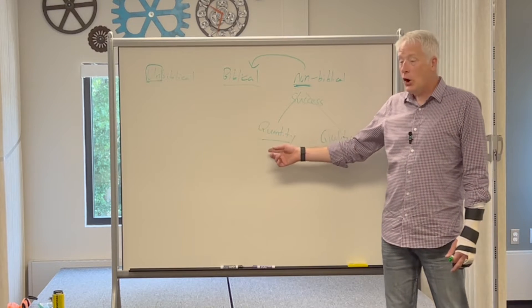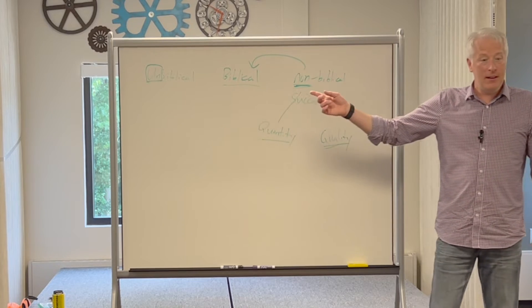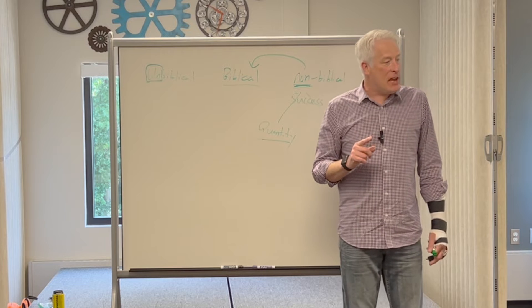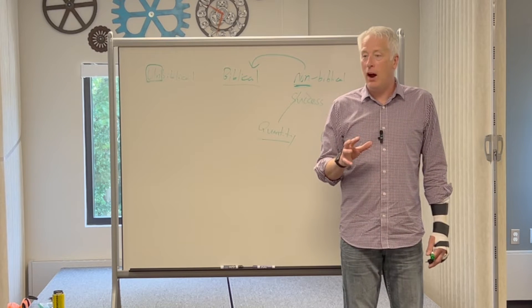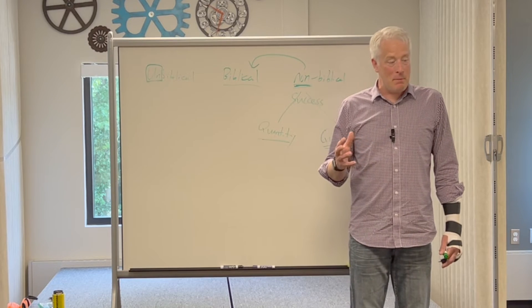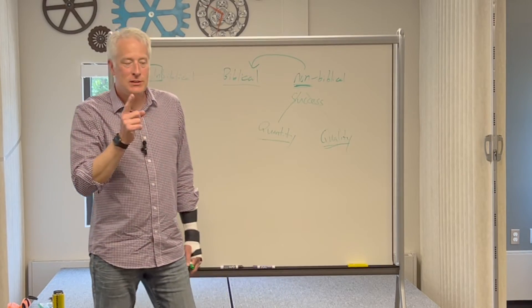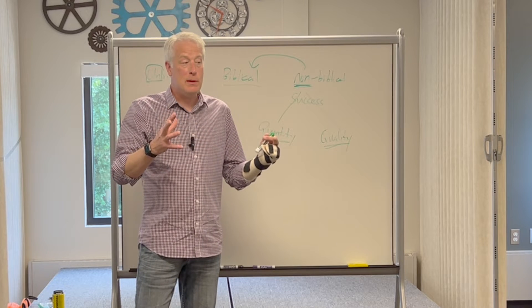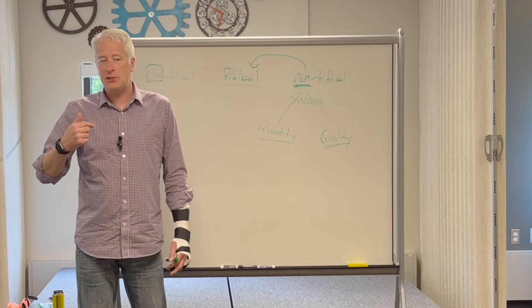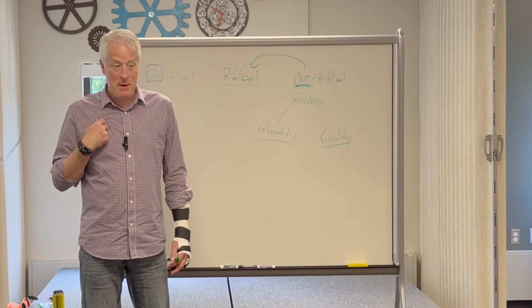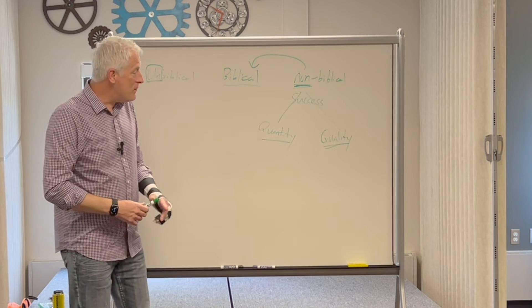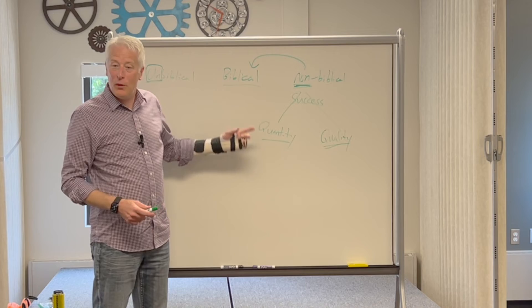We can also say David got in big trouble with God when he said, hey, let me count and see how many people that I have that could be in the army. Man, I'm a big shot now, let's count all of these people. God said no. Are you basing your success on how many people you have or are you basing your success on the fact that you rely on me? God is saying I'm giving you the success, so we've got to be very careful about throwing some of those numbers around.